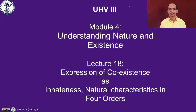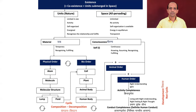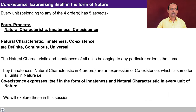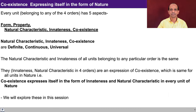We already studied it in lecture 17 briefly. Now I'll try to see the whole thing as an expression of coexistence. This is an overview of the whole existence, something that we have discussed earlier. We also saw that the coexistence expresses itself in the form of nature and there are five aspects to be studied. The form and property keep on changing, but the natural characteristic, innateness and coexistence in every order is something which is definite, continuous and universal. That's how we can understand it, share it, and it can be studied with definiteness.